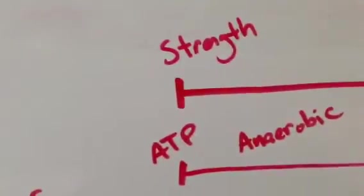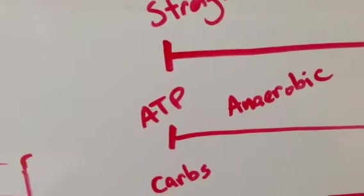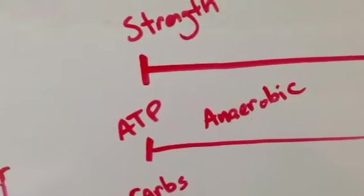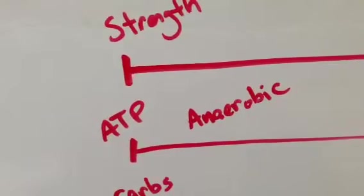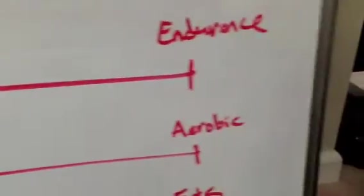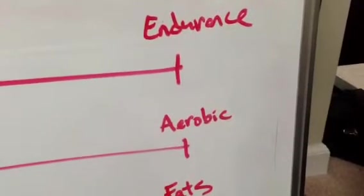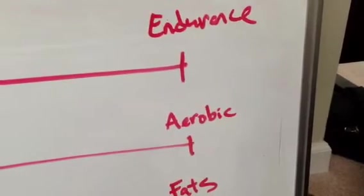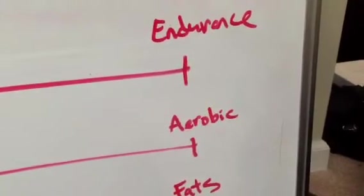And corresponding with the strength end of the spectrum, we have these energy systems, these high powered energy systems, which is the ATP, anaerobic system, and then all the way over on the endurance end of the spectrum, we have the aerobic system being used.